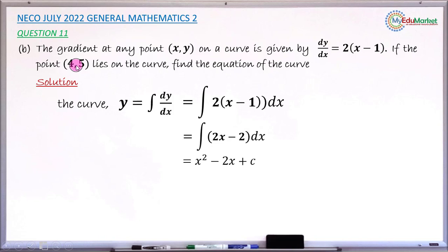So you now make use of this sample value of x and y that happens to lie on the curve y to find this constant of integration. So substituting x by 4 and y by 5 in this function y equals x squared minus 2x plus c will enable us to find the constant of integration, which is this letter c.